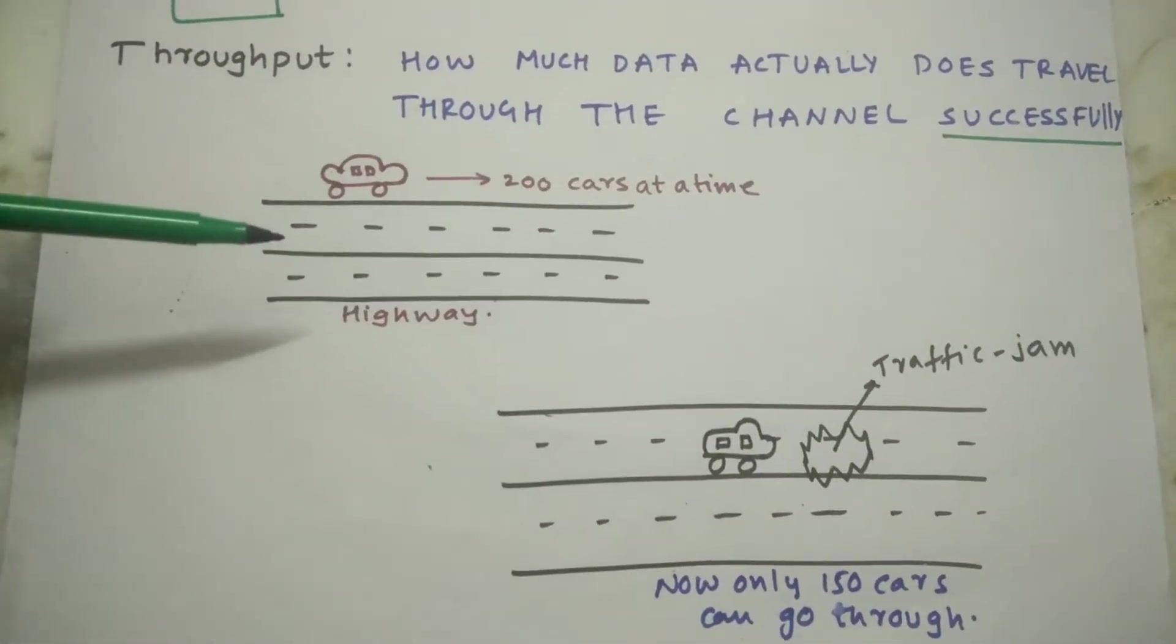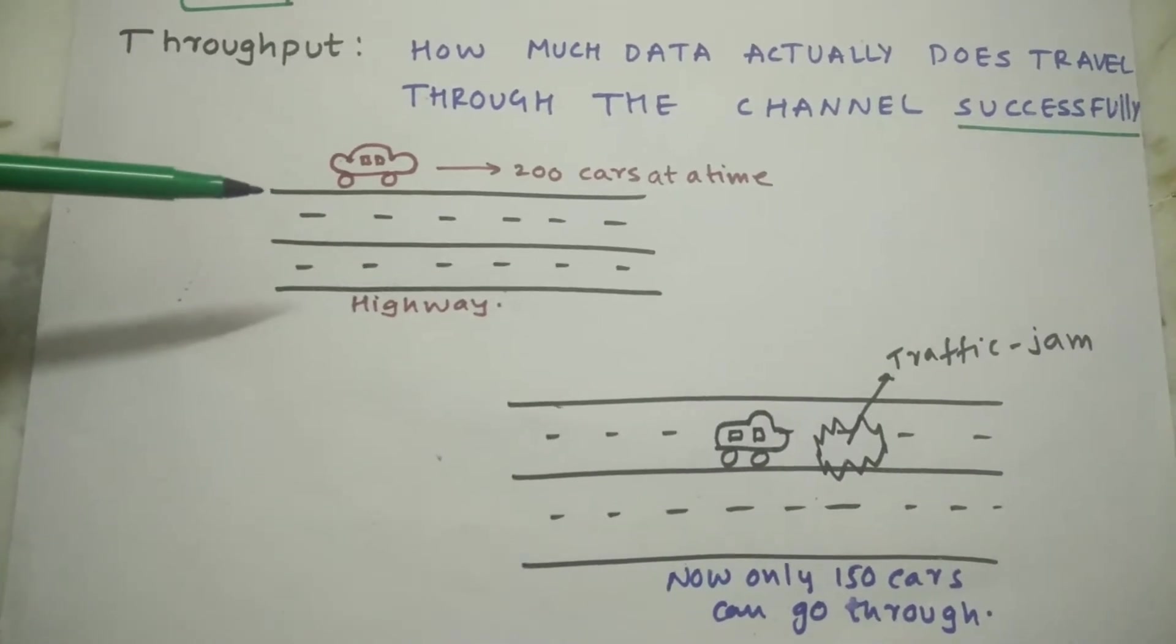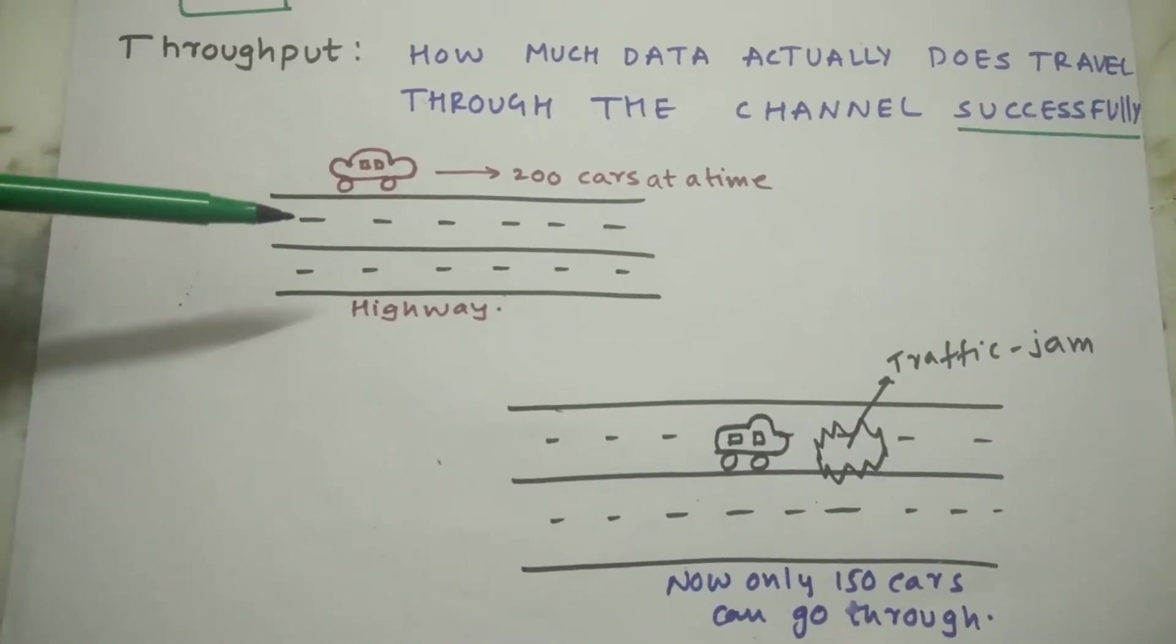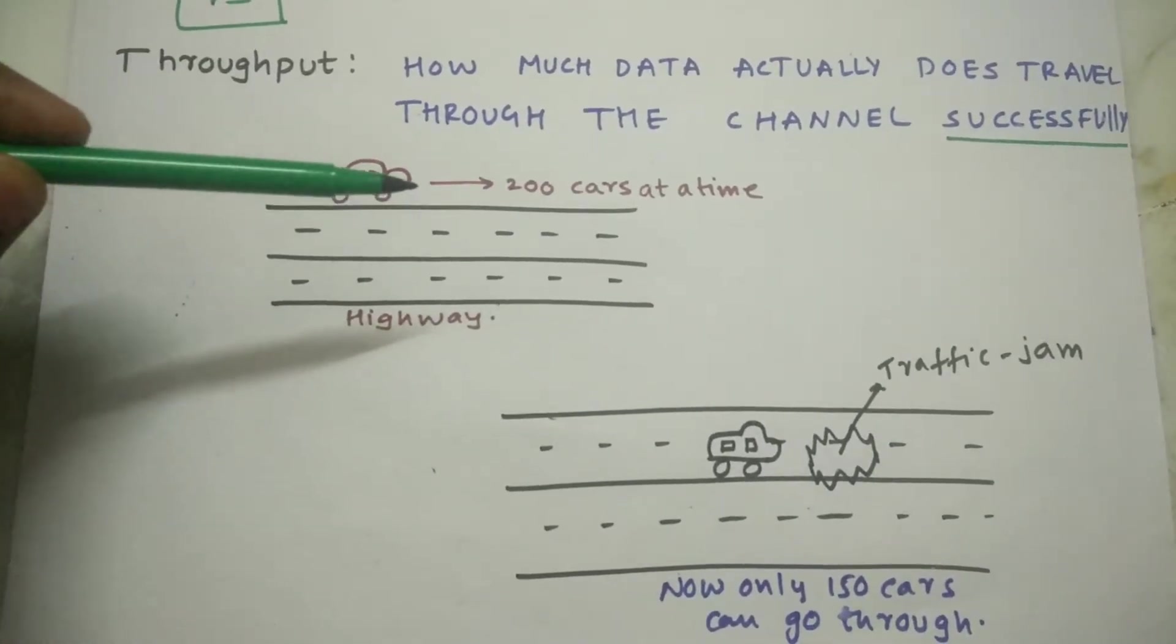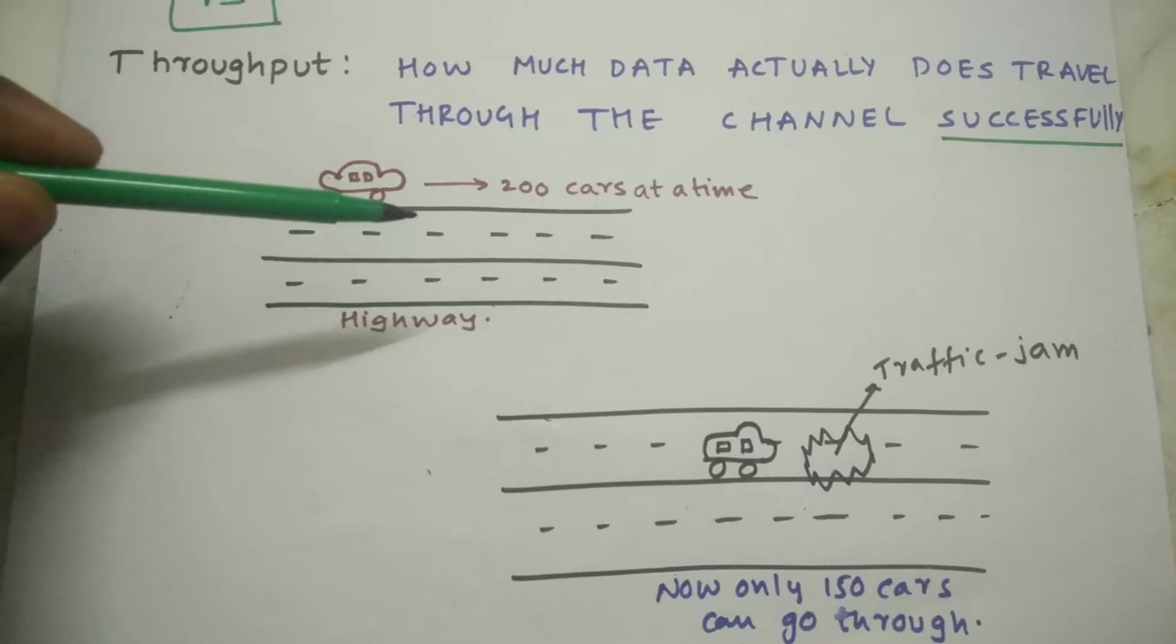So let us consider a highway. This highway was constructed for 200 cars that can pass on this highway at a certain time. Let's say one hour, 200 cars can go through.